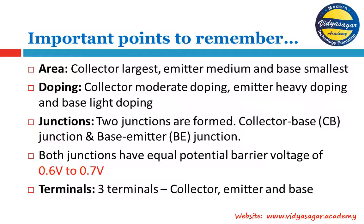In transistors, the collector layer has the largest area, the emitter layer has medium area, and the base layer has the smallest area. Regarding doping — when manufacturing collector, base, and emitter layers, adding trivalent or pentavalent elements is called doping. The collector layer is moderately doped, the emitter layer is heavily doped, and the base layer is lightly doped. In an NPN transistor, the collector has a medium number of electrons, the emitter has the maximum, and the base has the minimum number of holes.